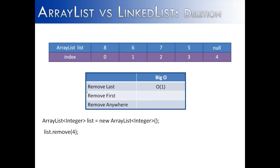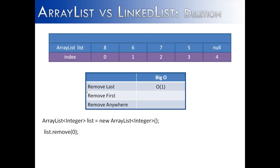If we're going to remove the first item in an ArrayList, it is going to be a different story. The actual removal of the first item would have a Big O of 1, or constant time. But after the item is removed from the ArrayList, the void has to be filled in order for the indexing to be correct. One way to do that is to take the data and shift it left 1. That shifting of the data is going to give the operation a Big O of N, N being the size of the ArrayList.